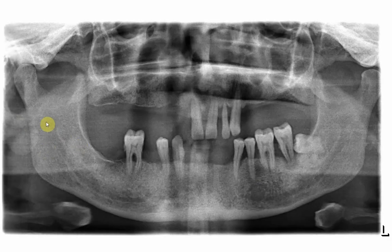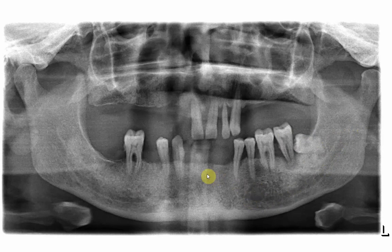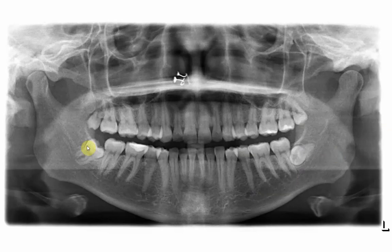Comparing with another case where these teeth have been extracted: you can see the canal passes all the way and then loops back. This is also an impacted, horizontally impacted molar, but it is very far away from the canal. The canal shows no change, no narrowing, and no loss of the tram lines, meaning the tooth is located far away from the canal.